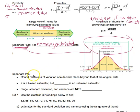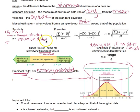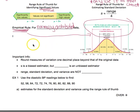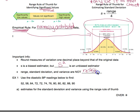Important info for this section: round measures of variation one decimal place beyond that of the original data — the same rule we had for mean, median, and mid-range. Standard deviation for a sample is a biased estimator, meaning the sample standard deviation does not center around the population standard deviation. However, the sample variance is an unbiased estimator. Also, range, standard deviation, and variance are none of them resistant — they are all going to be affected by the presence of outliers.